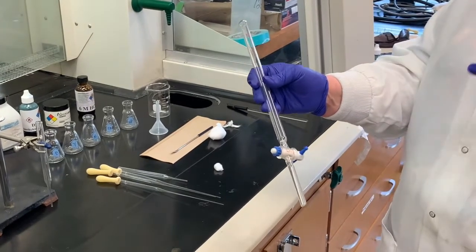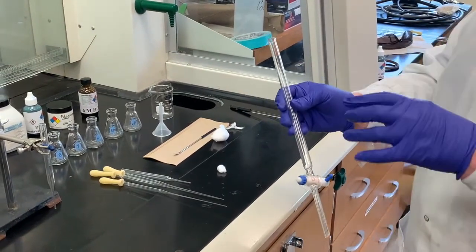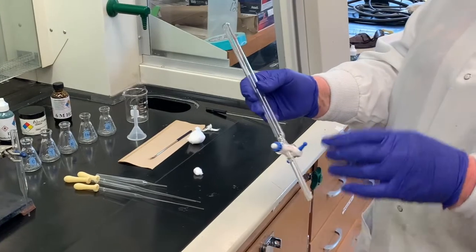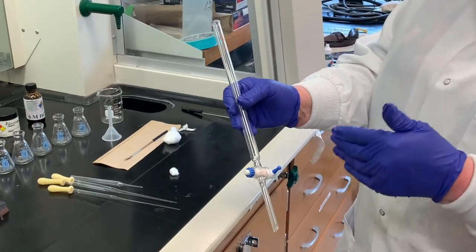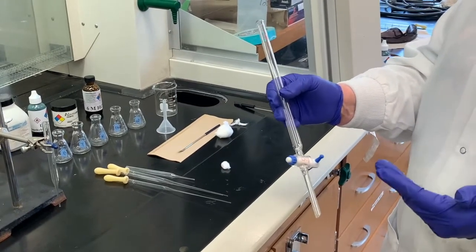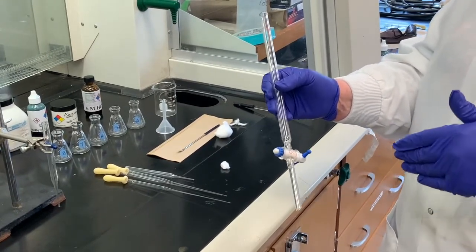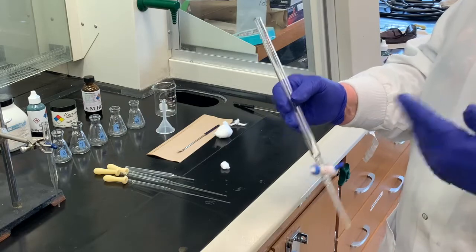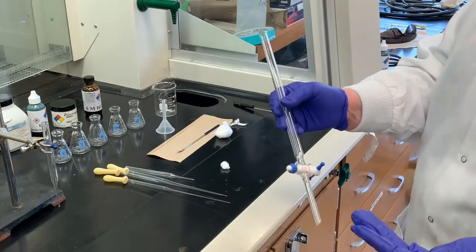Usually thin layer is a precursor to the column experiment. If you remember from the thin layer chromatography, we chose different solvents. We were trying to figure out what was the best solvent system to use to distinguish between the different components of chlorophyll and spinach leaves.